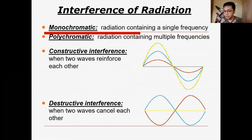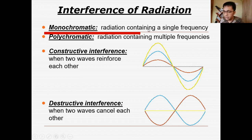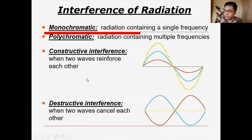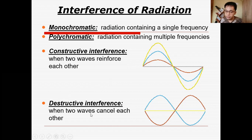We also have interference of radiation. There are two types of light encountered in a spectrophotometer: monochromatic light, which contains only a single frequency or one color, and polychromatic light, which contains multiple frequencies or multiple colors. When these combine, we have two types of interference in polychromatic light. In constructive interference, two waves reinforce each other to form a stronger wave. In destructive interference, they cancel each other out and produce a straight line.